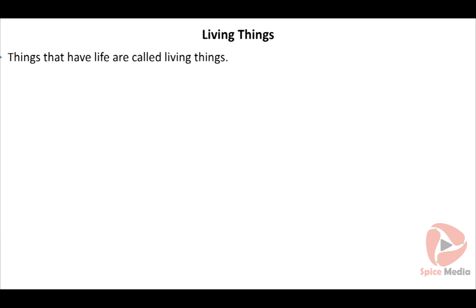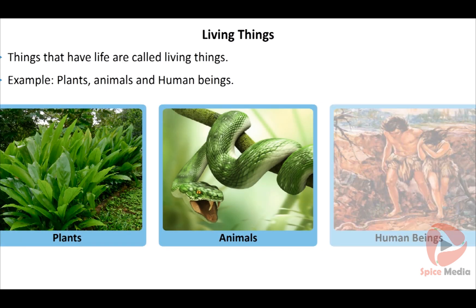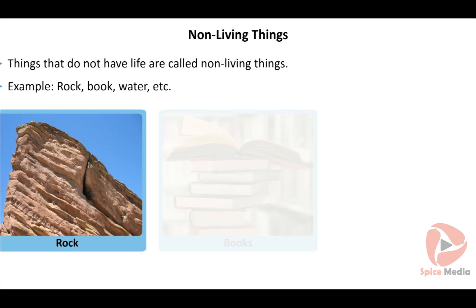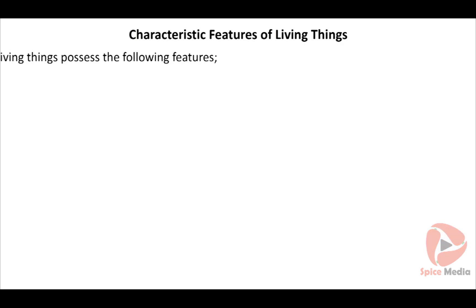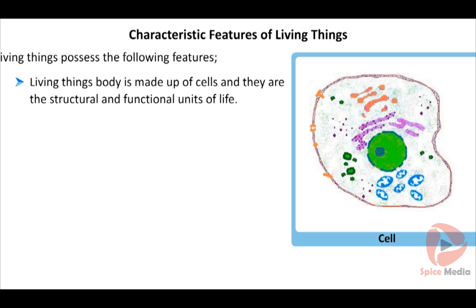Things that have life are called living things. Examples: plants, animals and human beings. Things that do not have life are called non-living things. Examples: rock, book, water, etc.